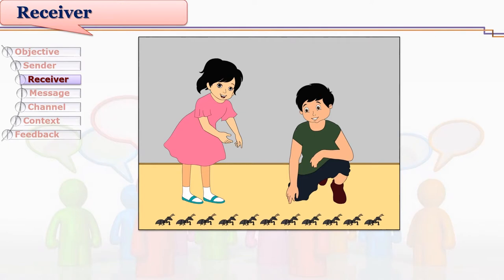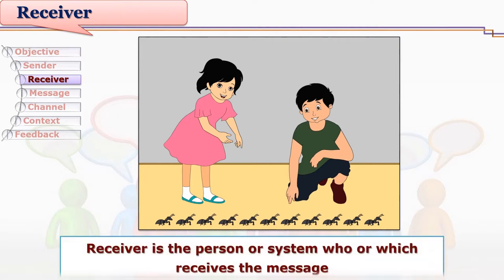See this picture — the girl is showing ants to her friend, and the friend is astonished to see the ants walking in a queue. Here the boy is the receiver of the message. The girl is talking to him and pointing out the queue of ants. The receiver is the person or maybe a system who receives the message after it starts from the sender.